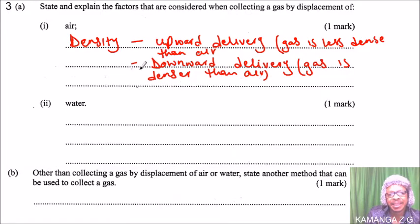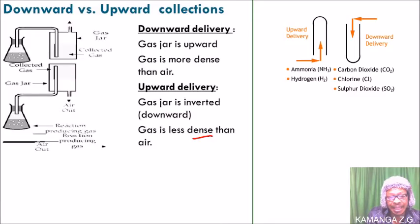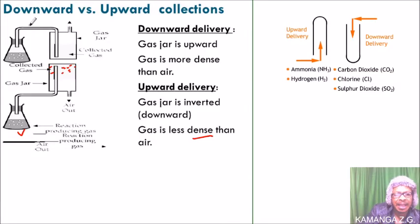Those are the factors we consider when collecting gas. To demonstrate, here we have a picture showing downward versus upward delivery. Let's start with upward delivery. When collecting a gas that is less dense than air, we use upward delivery. The gas is generated here after reaction and gets into the tube and into the gas jar. Because the jar is filled with air and the gas collected is less dense than air, the gas occupies the space and pushes the air out.